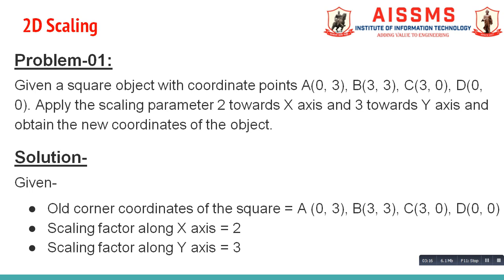Now let us see one problem based on 2D scaling. The problem statement is: given a square object with coordinate points A(0,3), B(3,3), C(3,0), D(0,0), apply scaling parameter 2 towards the x-axis and 3 towards the y-axis, and obtain the new coordinates of the object. The scaling factor along the x-axis is Sx = 2 and the scaling factor along the y-axis is Sy = 3.